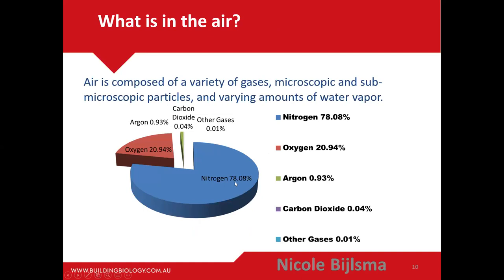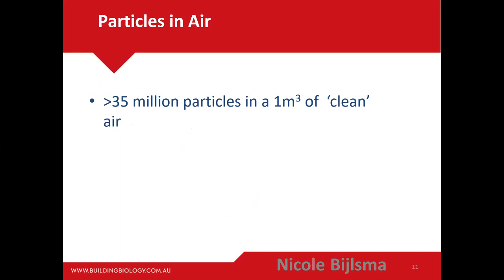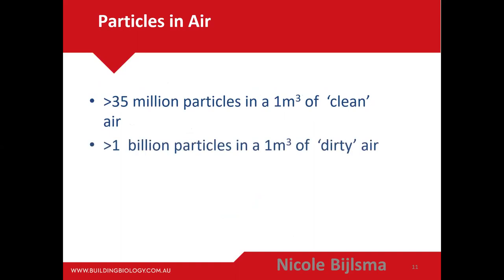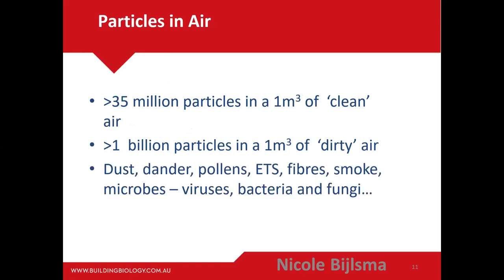Air is made up primarily of nitrogen (about 78%) and oxygen (about 21%), with carbon dioxide at only around 400 parts per million (0.04%), though it's rising due to greenhouse gases. Carbon dioxide is a good marker of poor ventilation — at 800 ppm in a room with three or four people, you'll start to get drowsy and experience reduced cognitive function. You breathe out about 40,000 ppm with every exhalation. In clean air there are about 35 million particles per cubic meter, and in dirty air about 1 billion.